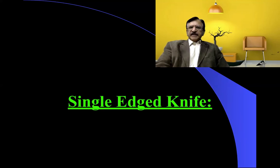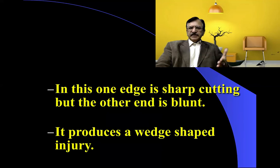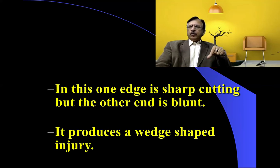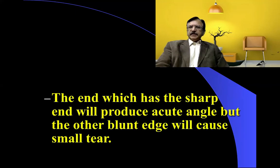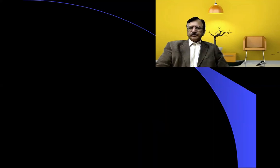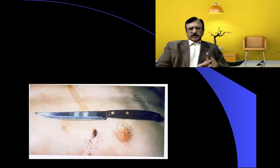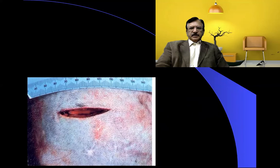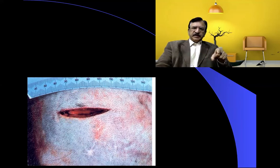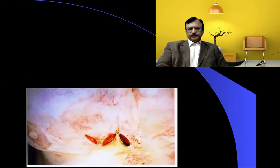If the weapon is a single-edged knife like a kitchen knife, it has one sharp cutting edge and one blunt end, producing wedge-shaped injuries. The end with the sharp edge produces an acute angle, but the blunt edge causes a small tear. On one side there is an acute angle, on the other side there is a wedge shape — the closer view shows the acute angle on the sharp edge side and an obtuse angle on the other end.